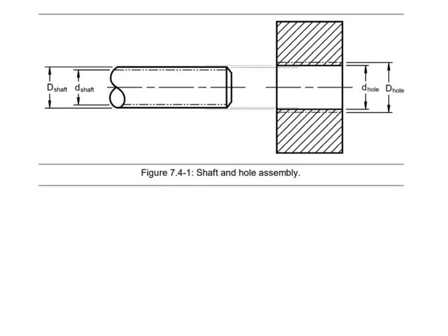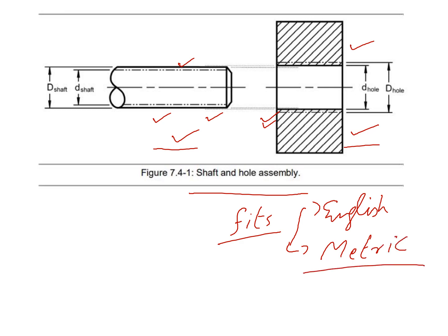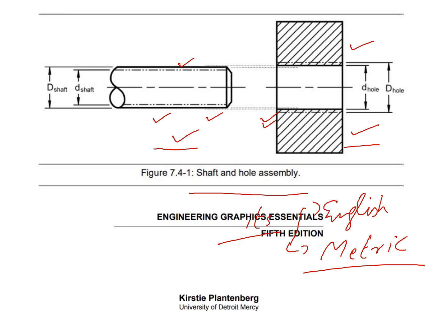Today we are going to take this basic shaft and hole assembly — this is a shaft and this is a hole — and derive the shaft basis system, the hole basis system, and see the different types of fits possible between shaft and hole, and the standards used to define the sizing of the shaft relative to the hole, both in the English standard and in the metric standard.